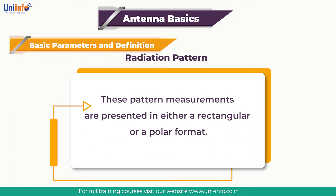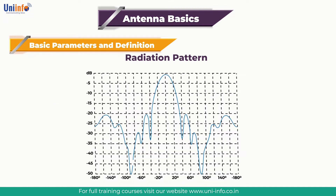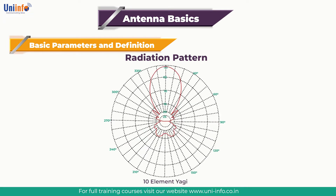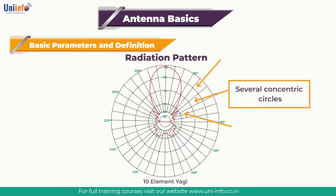These pattern measurements are presented in either a rectangular or a polar format. The figure here shows a rectangular plot presentation of a typical 10-element Yagi. Polar coordinate systems are used almost universally. In the polar coordinate graph, points are located by projection along a rotating axis, i.e., radius, to an intersection with one of several concentric circles. Next comes the polar plot of the same 10-element Yagi antenna.